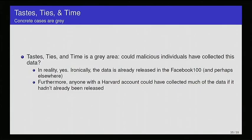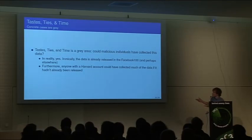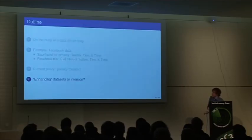To return back to the concrete example of this Tastes, Ties, and Time data set, it's sort of a gray area. It would be hard for malicious users to collect all the attributes that the researchers collected. It would be possible for them. You would need an account in the Harvard network, which may not be that hard. You would need to have a Harvard email address or to make Facebook think you had one. And they also did a lot of manual annotation on the data. So I will say it is sort of a gray case. It's not easy to deal with this problem.